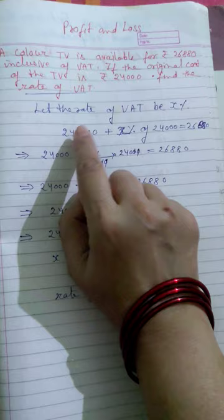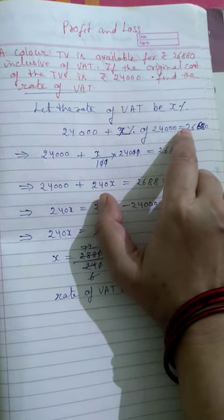See, how much is the original price? 24,000. X percent of 24,000 is equal to 26,880.